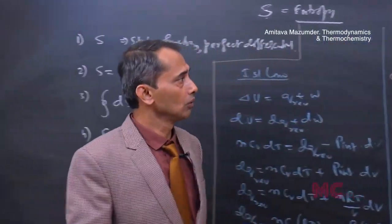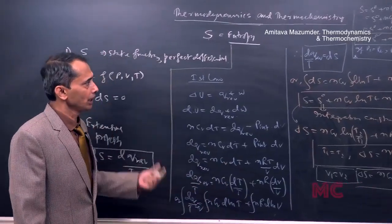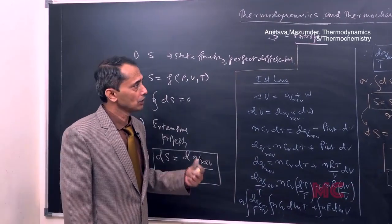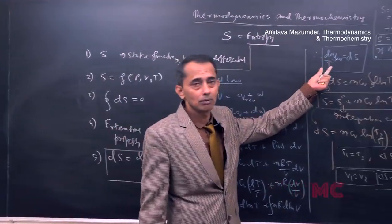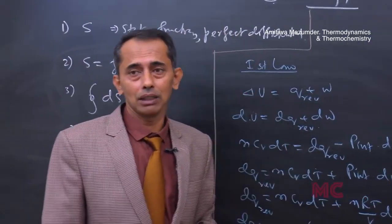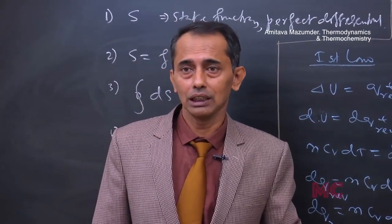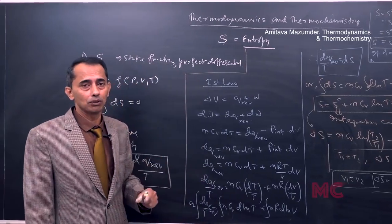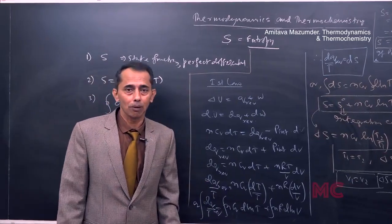In this way we can find the change in entropy for various processes. The definition of entropy is that it is dQ reversible divided by T — the ratio of heat taken to the temperature in Kelvin at that moment is the change in entropy.